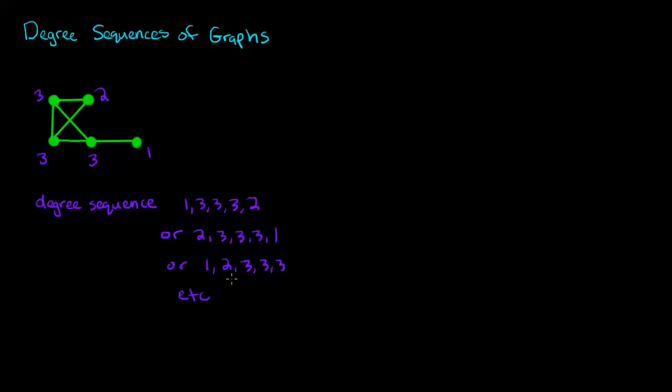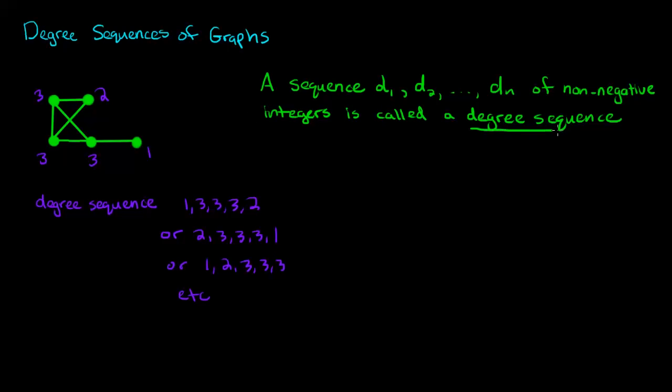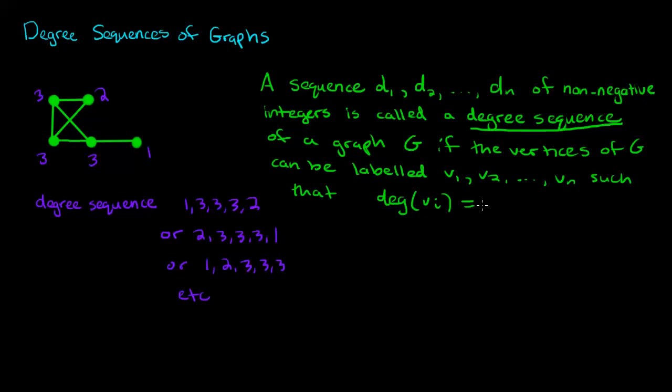So let's be a little bit more specific. A sequence d1, d2, up to dn of non-negative integers is called a degree sequence of a graph g if the vertices of g can be labeled v1, v2, up to vn such that the degree of vi is equal to di for all i from 1 to n. So if we take a look at the example we started with, if I was to label the vertices as follows, then I would see that it satisfies the first degree sequence that I wrote down. Given a different labeling I would be able to see that it satisfies this one or this one as well.